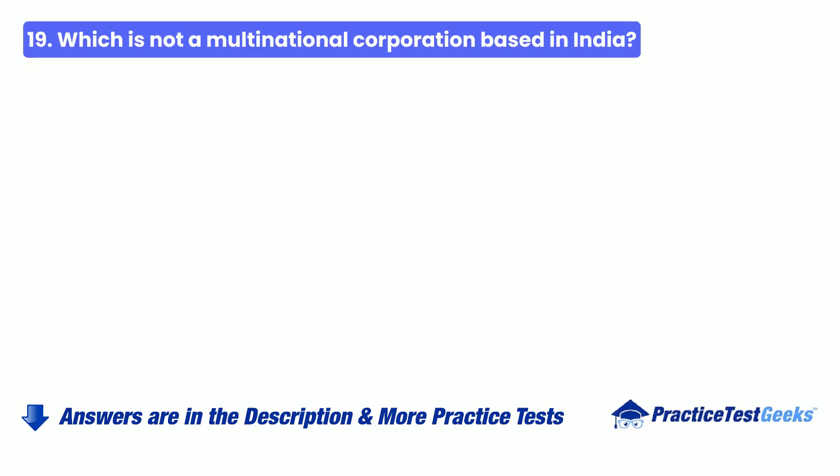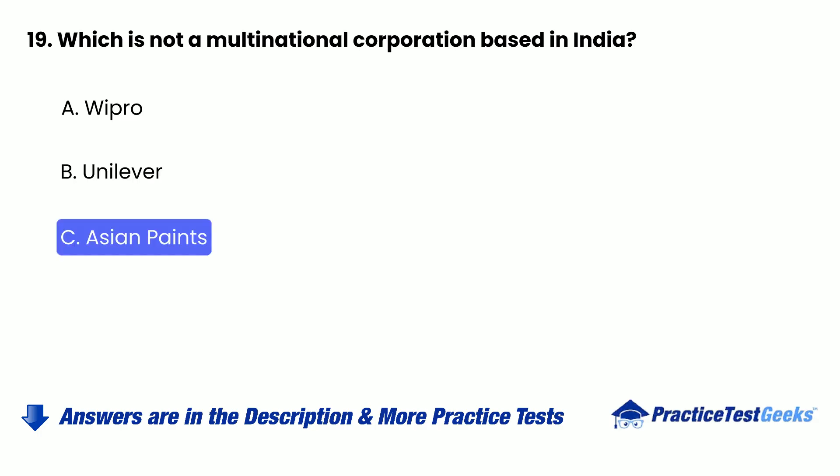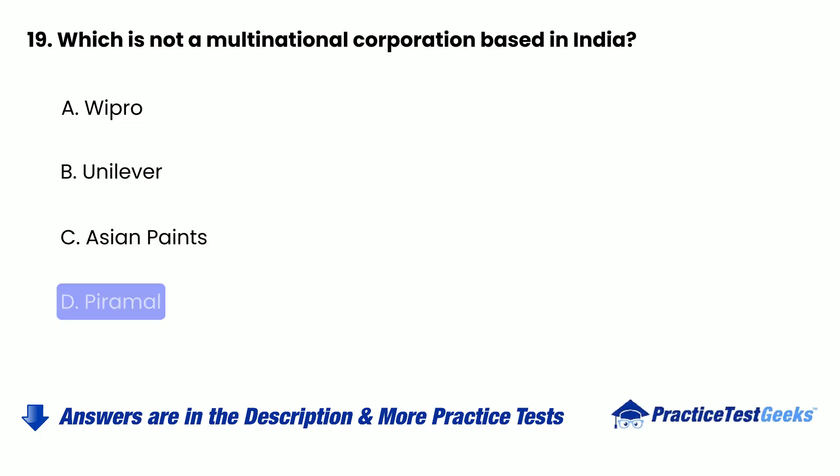Question 19: Which is not a multinational corporation based in India — A. Wipro, B. Unilever, C. Asian Paints, D. Pyraml.